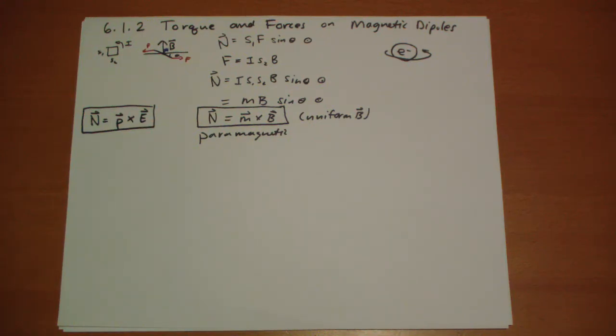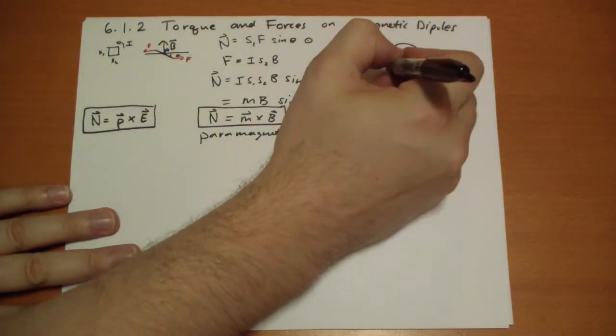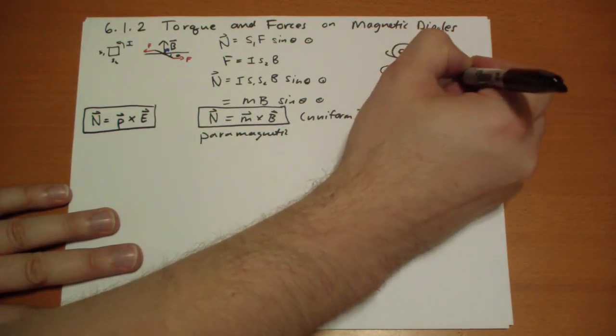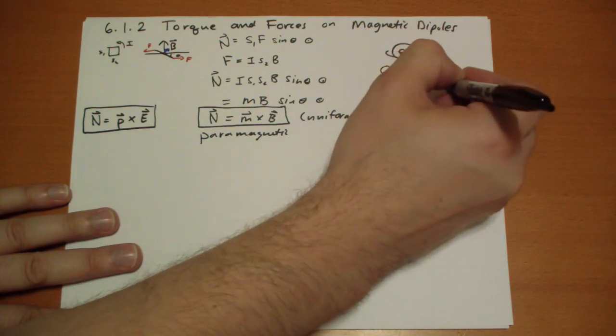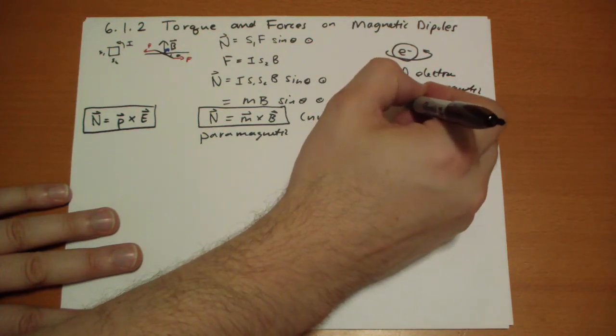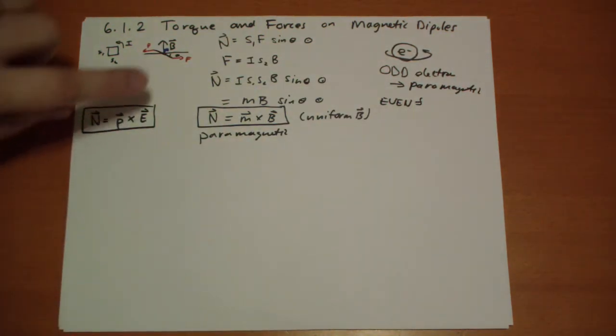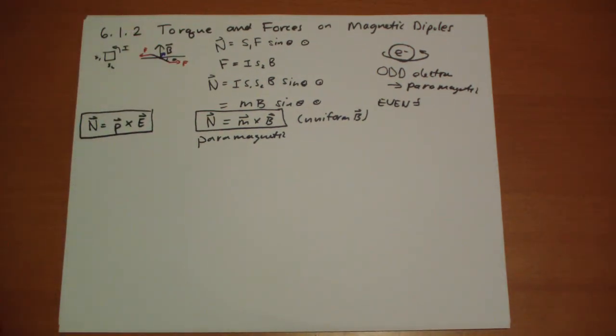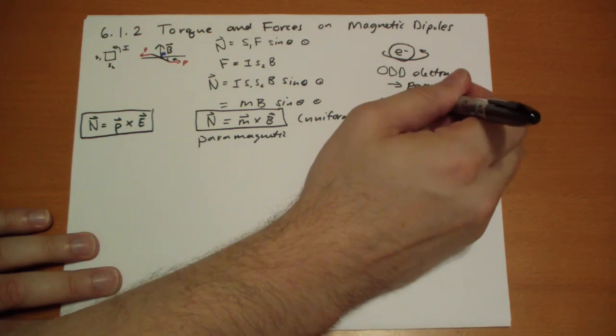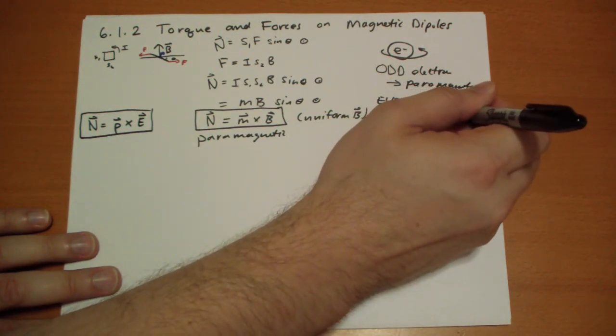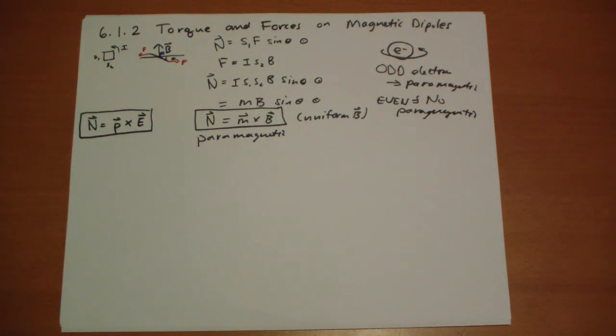And so the rule is that when you have an odd number of electrons, you tend to get paramagnetic material. If you have an even number of electrons, then you're going to basically get no alignment. There's no paramagnetic. This is a general rule of thumb. There's some atoms, some things that don't agree with this rule. And this is true for atoms.